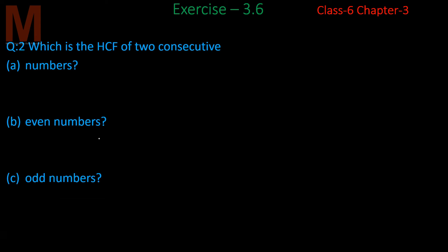Question 2 asks: which is the HCF of two consecutive numbers? Part A is about numbers, Part B asks about HCF of consecutive even numbers, and Part C asks about HCF of consecutive odd numbers. In this question, there are two important things: consecutive numbers and HCF. Consecutive means one after another — for example, 3 and 4 are consecutive numbers.